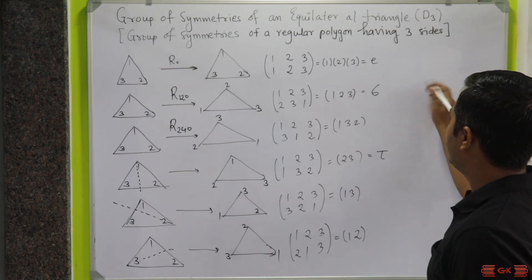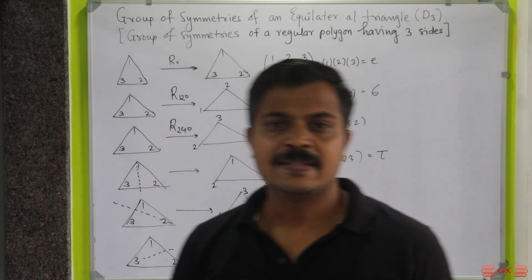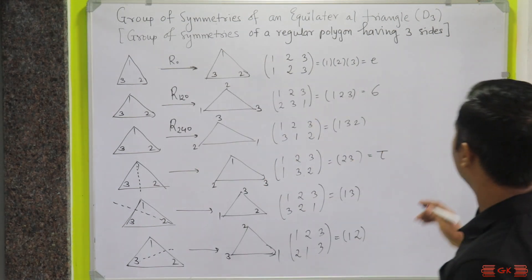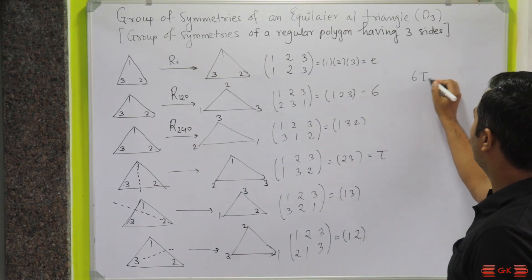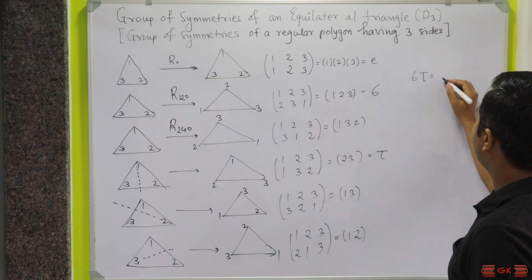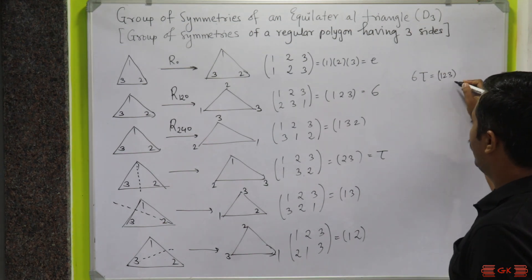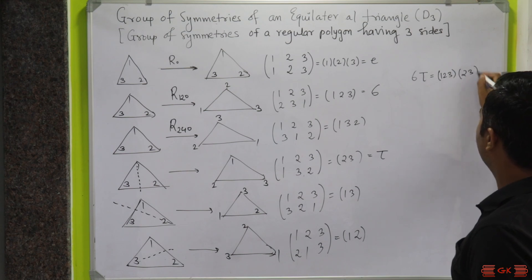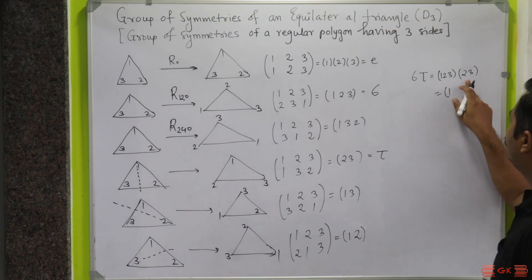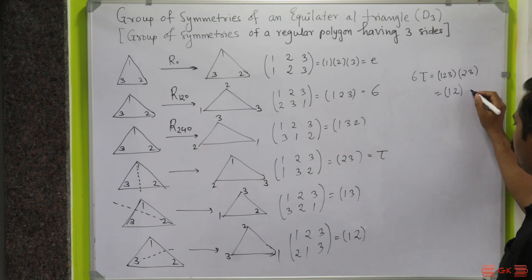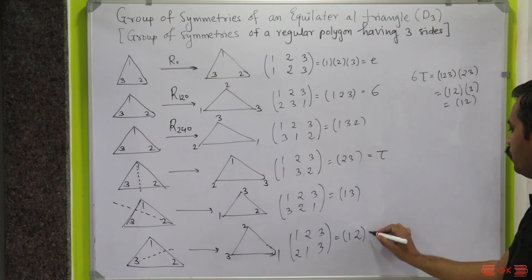If I take the multiplication of sigma and tau, let us see what we get here. Sigma tau is actually equal to—sigma is (1,2,3) and my tau is (2,3). So after taking the product: 1 maps to 1, 1 maps to 2. Next, 2 maps to 3, 3 maps to 1, so I can close. And finally, 3 maps to 2 and 2 maps to 3. So this is actually (1,2) and (2,3). So this is our sigma tau.